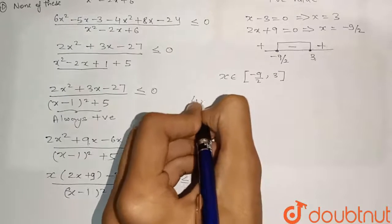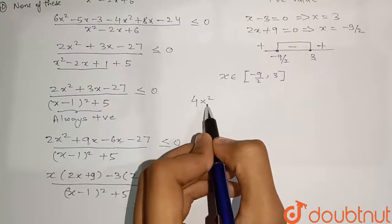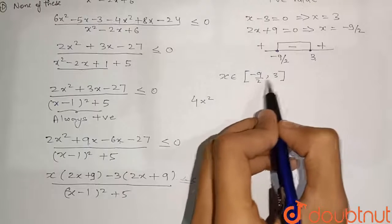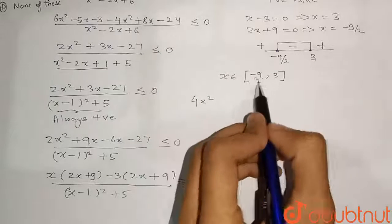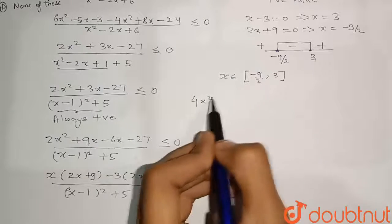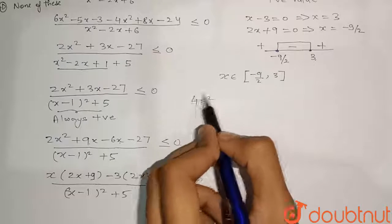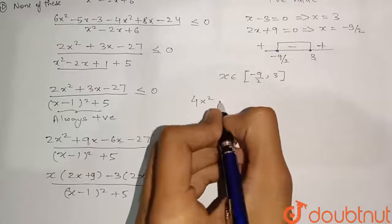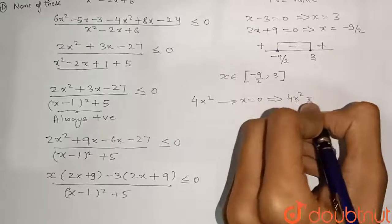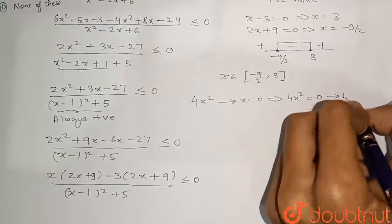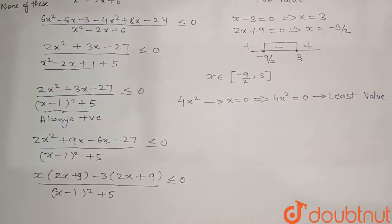For the minimum value of 4x²: since x = 0 lies within the interval [-9/2, 3], it is a valid value. At x = 0, 4x² = 0. Since 4x² is always non-negative, the minimum value is 0. This is the least value of the expression.